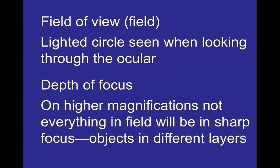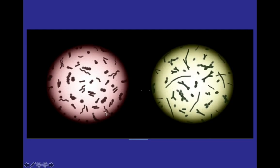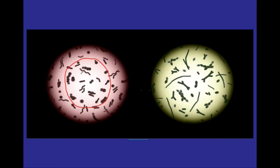Two other important concepts when viewing things under the microscope are the field of view and the depth of focus. The field of view refers to the area of things you can see under the microscope. One thing to keep in mind is that the field of view will change based on the total magnification. With the scanning objective lens you might see a wide picture, but as you switch to the low power objective, the field of view decreases — structures inside will be blown up larger, but as total magnification increases, the field of view decreases.